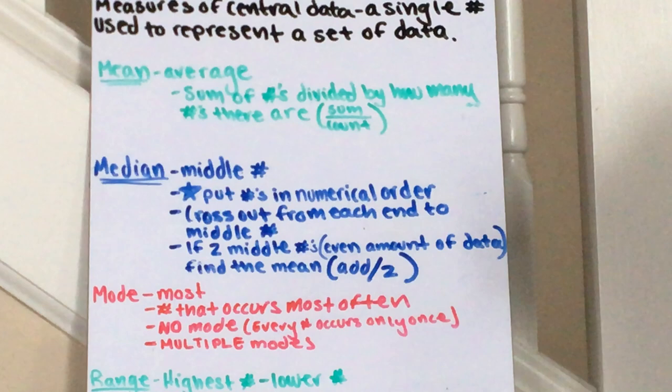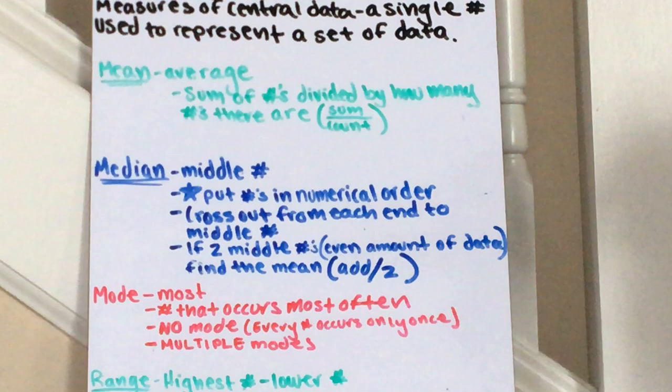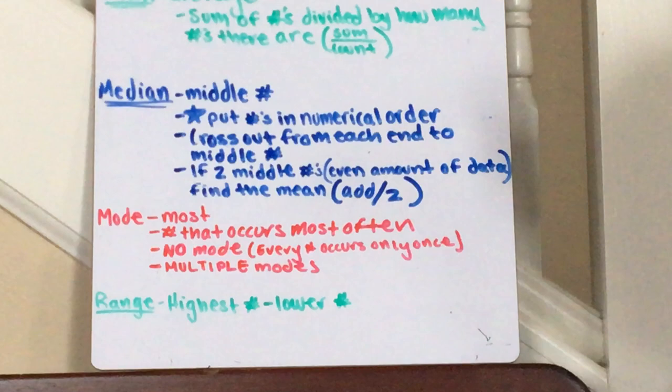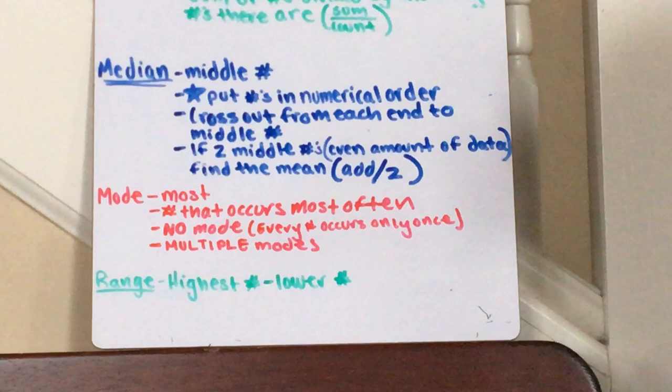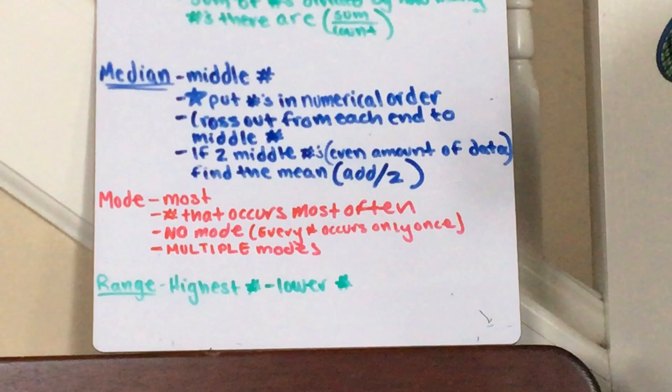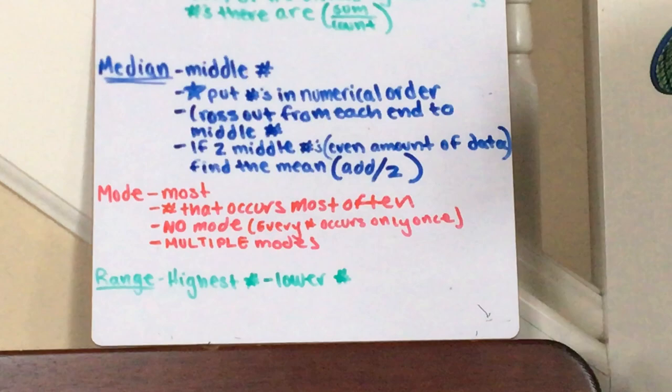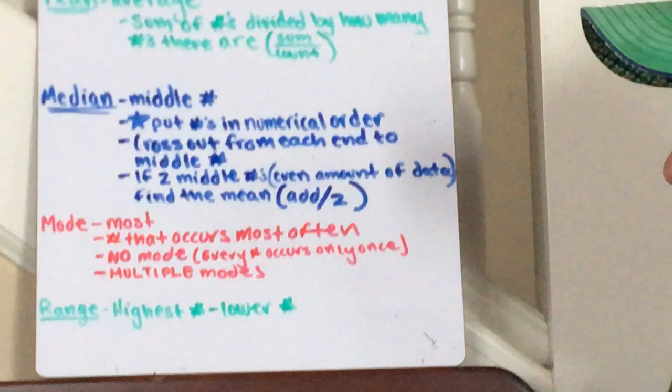Secondly, median. You must put the numbers in order first. That's the biggest thing that kids forget to do. They do not put the numbers in order and then they just cross them off from end to end to find the middle number, and it's not the correct number because they didn't put them in numerical order.